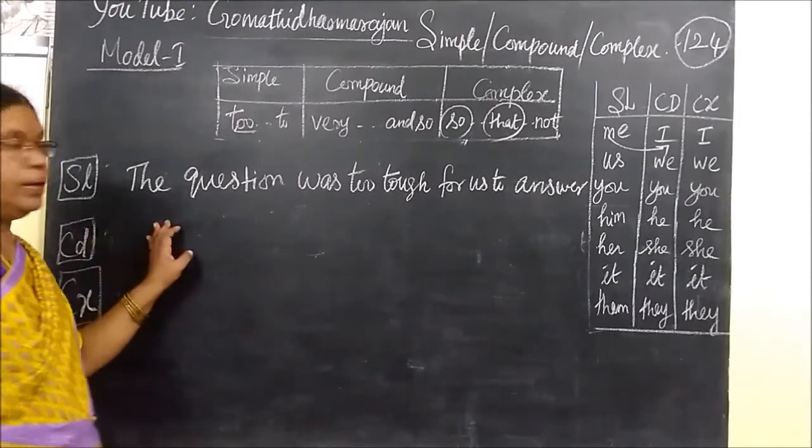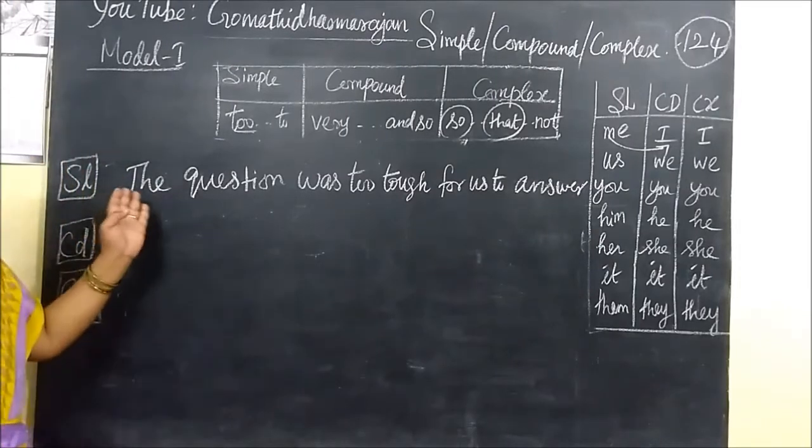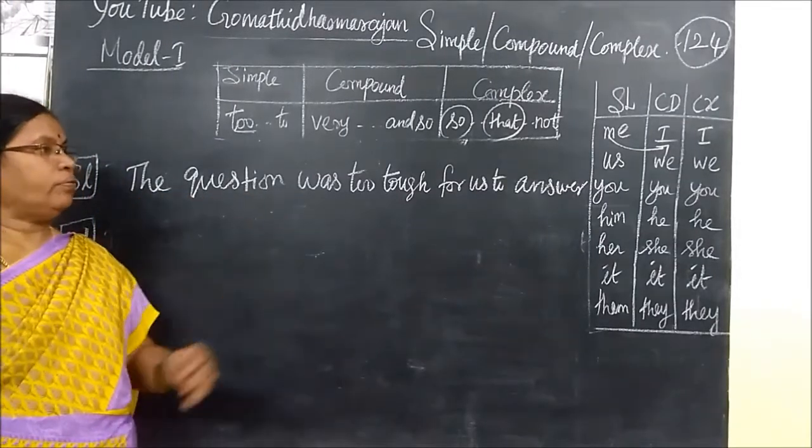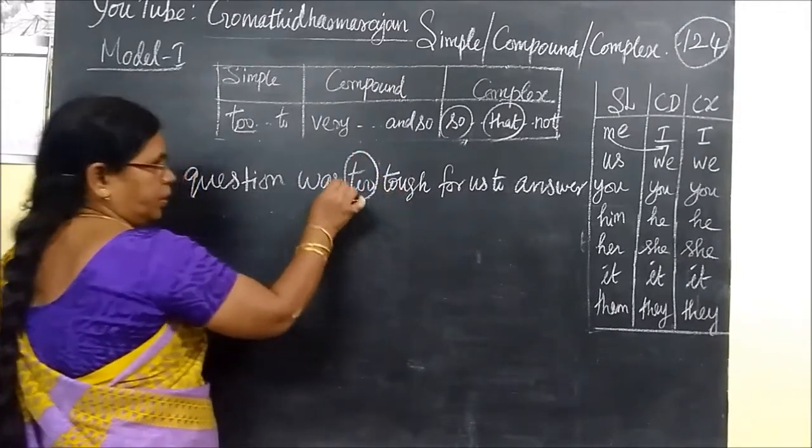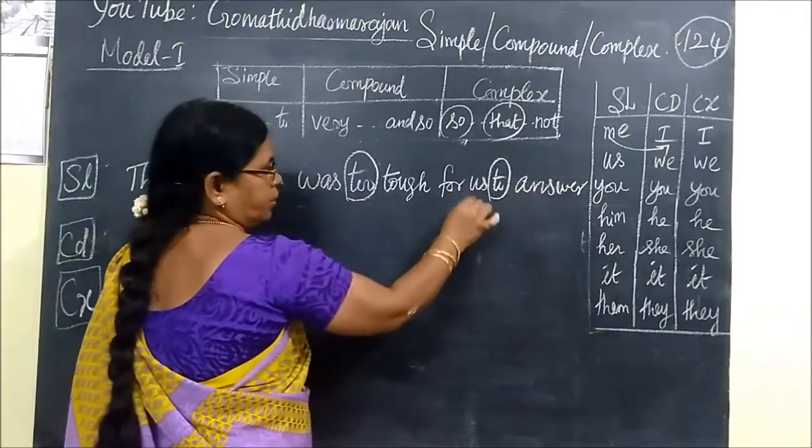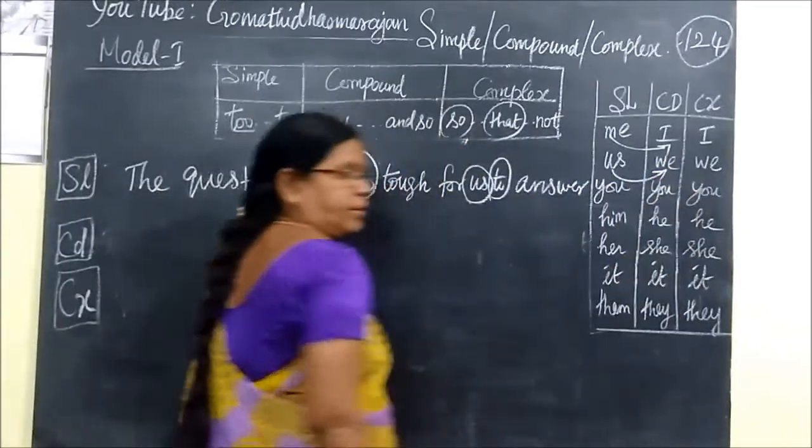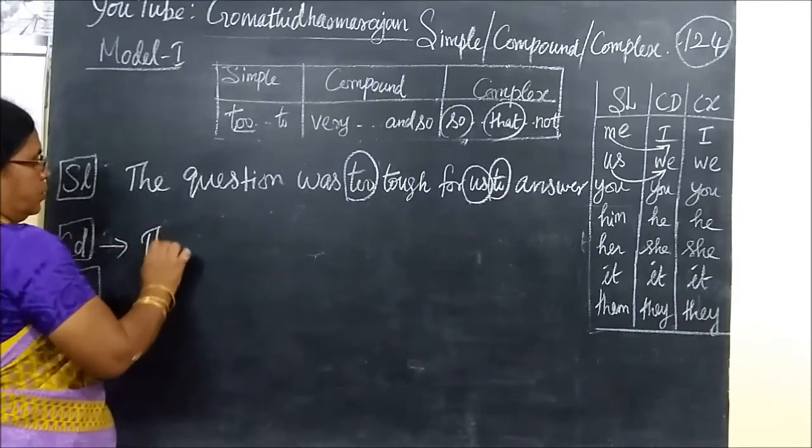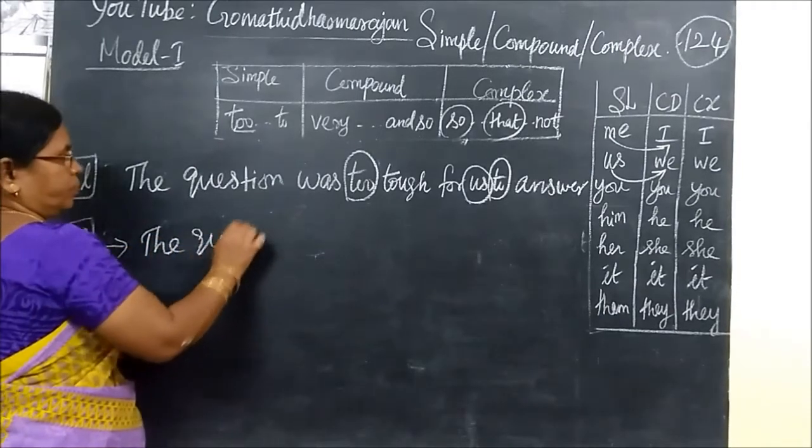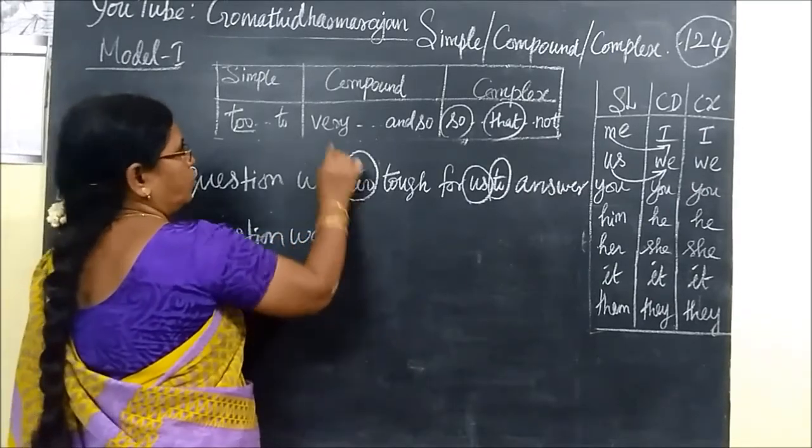So you will see the next type. Sorry. The same type. Another example. The question was too tough for us to answer. So this is the two cupola. In the two cupola we change. Otherwise in the two cupola we change. Accepting the number of us is changed as we. So you write for compound sentence. The question was.